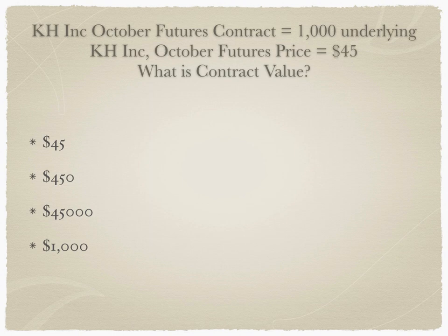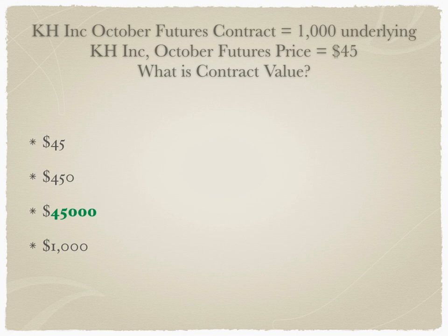Second question: KH Inc has futures contracts traded on an exchange. The October futures lot size is 1,000 underlying stock, and the KH Inc October futures price is $45. Calculate the contract value. Is it $45, $450, $45,000, or $1,000?